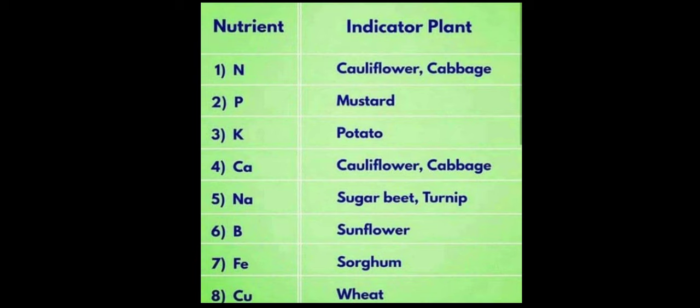Six, boron — sunflower; seven, ferrous (iron) — sorghum; eight, copper — wheat. These are some of the indicator plants that indicate the different nutrients.